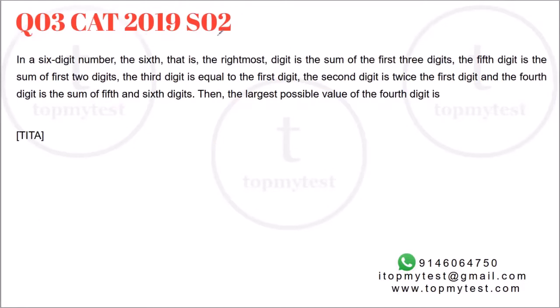Third one is from CAT 2019, slot 2. This is a combination of numbers and basic algebra. Let's see what this is. In a six-digit number, the sixth, that is the rightmost digit, is the sum of the first three digits. The fifth digit is the sum of the first two digits. The third digit is equal to the first digit. The second digit is twice the first digit. And the fourth digit is the sum of the fifth and the sixth digit. What is the largest possible value of the fourth digit?